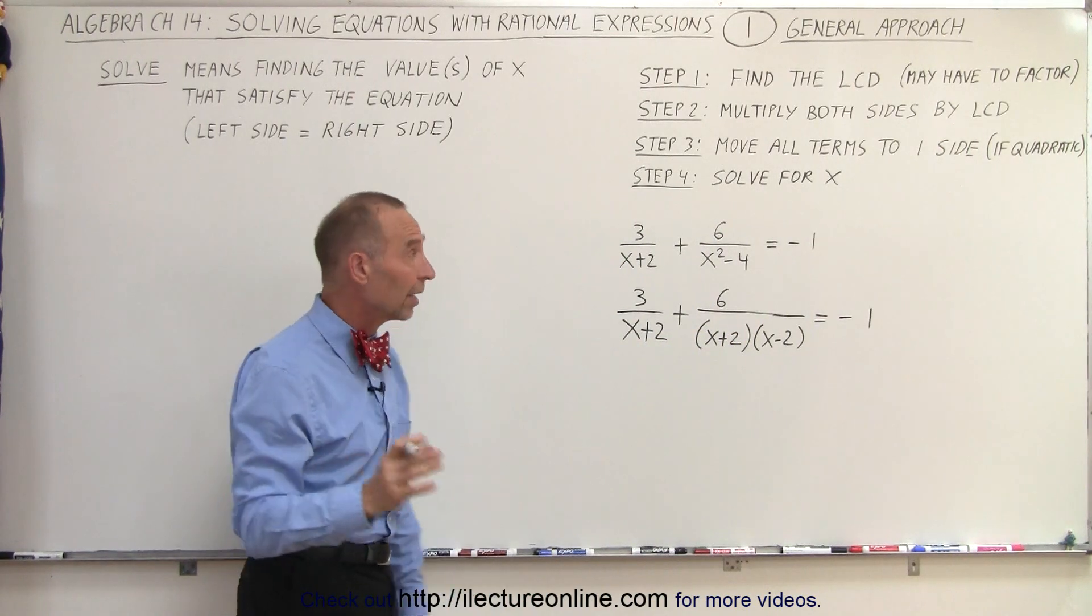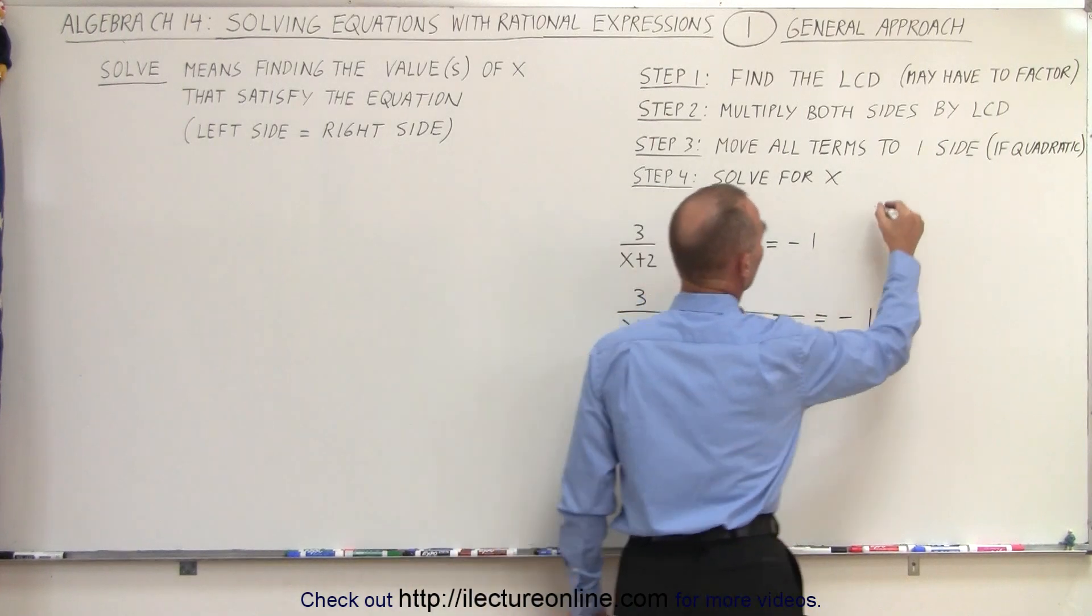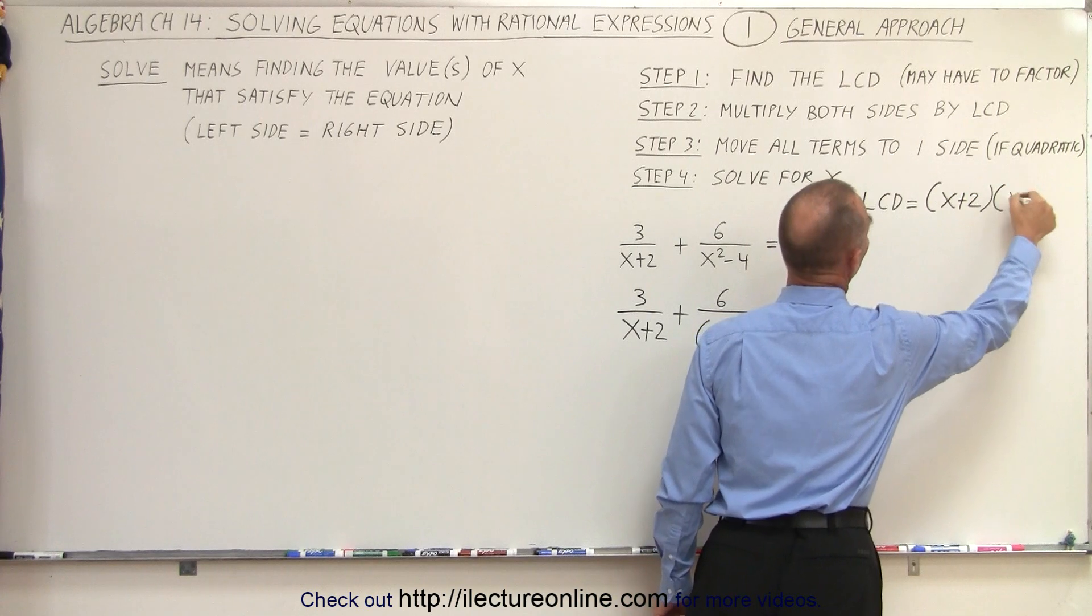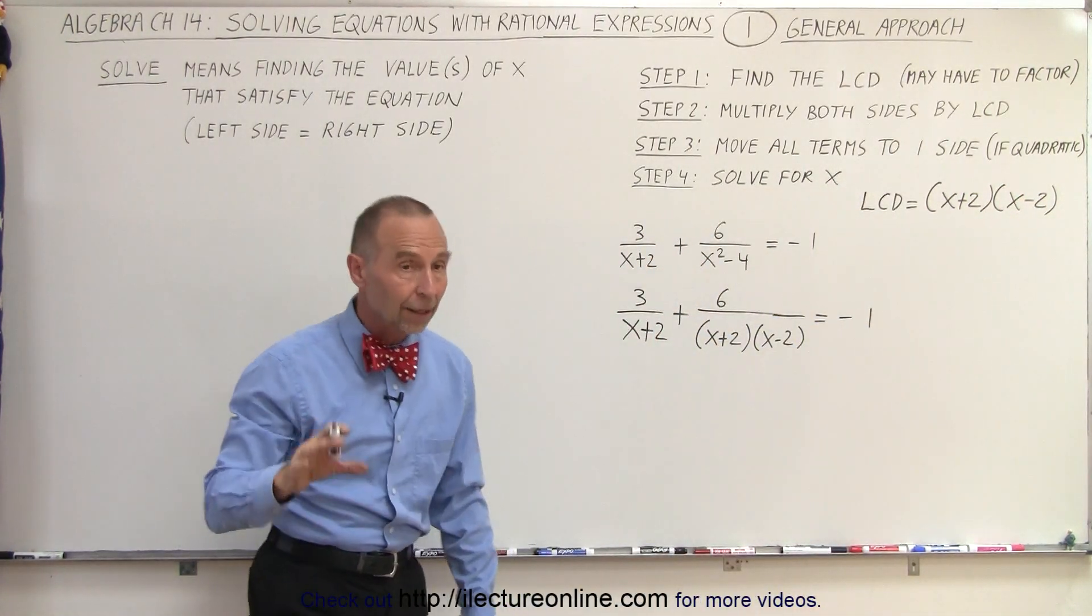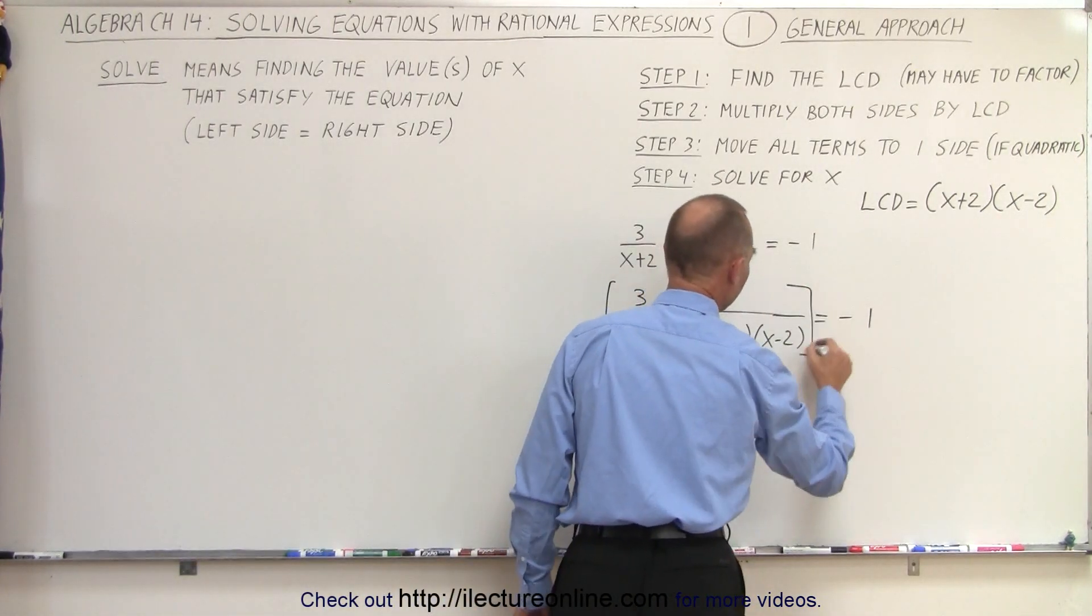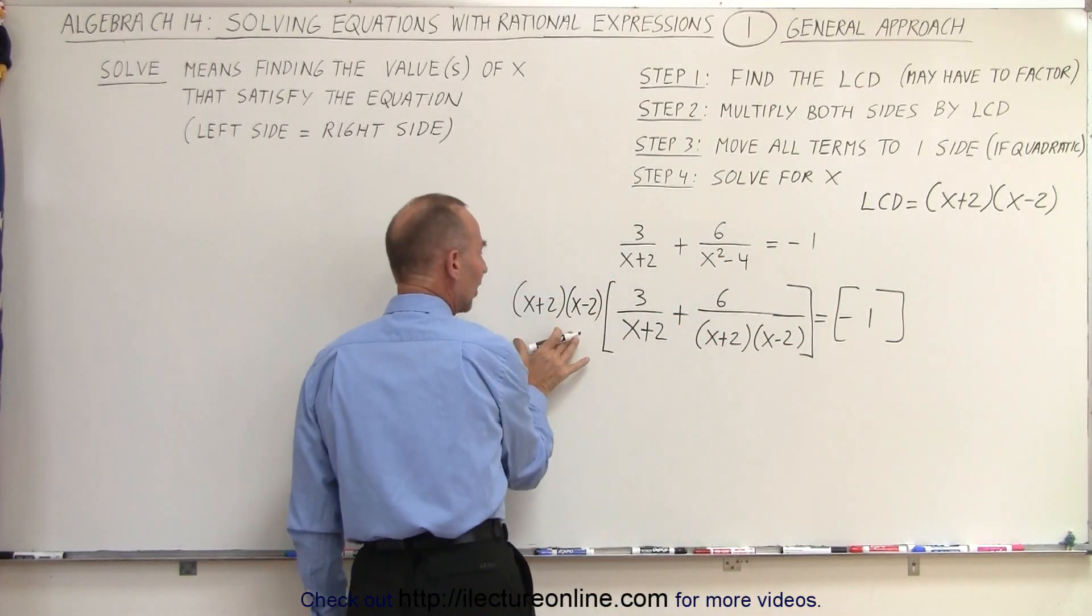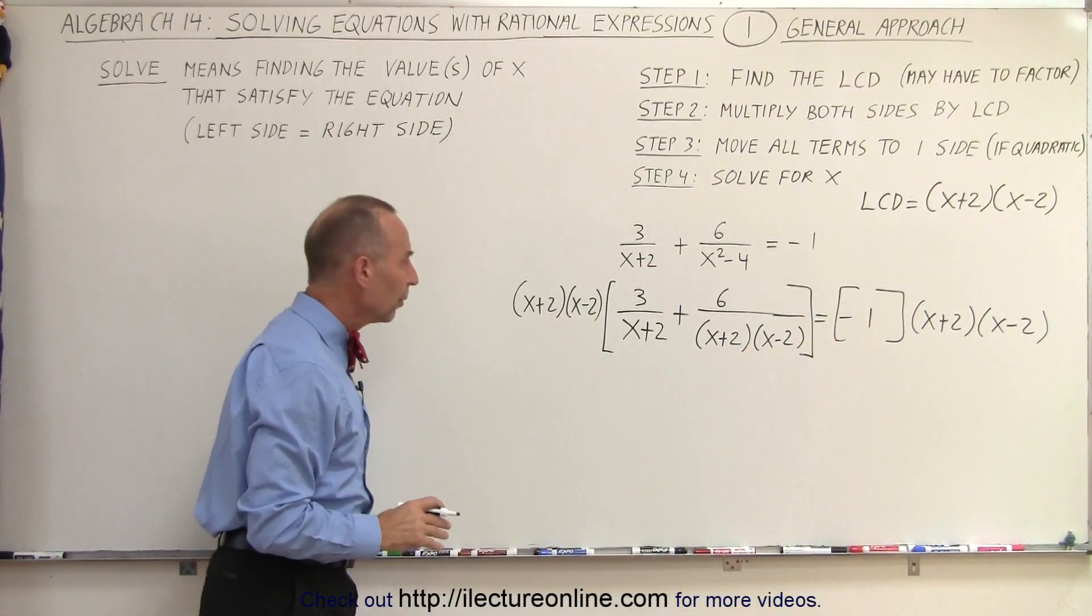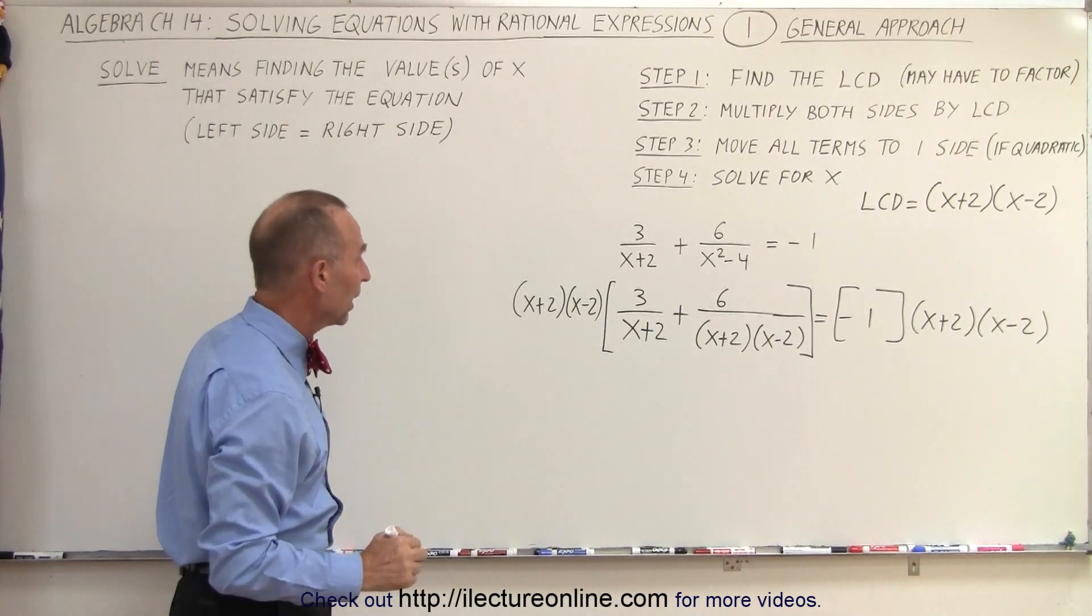So now we can clearly see what the LCD is, the lowest common denominator. It'll be this denominator right here. So the LCD is equal to x plus 2 times x minus 2. So what we're going to do now is multiply both the left side and the right side of that equation by the lowest common denominator. So on the left side, and we do the same thing on the right side. Okay, once we've done that, we can go ahead and multiply every term on the left side and the right side with that lowest common denominator.